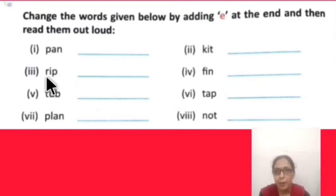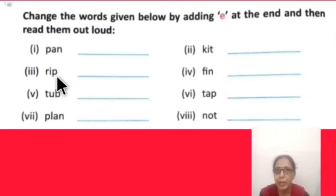Next word: R-I-P, 'rip' — meaning to cut or tear. When E is added at the end, the spelling becomes R-I-P-E, 'ripe' — meaning 'paka hua,' fully grown or matured.